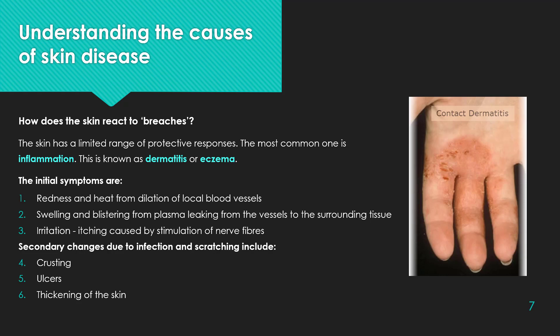How does the skin react to breaches? The skin has a limited range of protective responses. The most common one is inflammation, known as dermatitis or eczema. The initial symptoms are: redness and heat from dilation of local blood vessels; swelling and blistering from plasma leaking from the vessels to the surrounding tissue; and irritation and itching caused by stimulation of nerve fibers. Secondary changes due to infection and scratching include crusting, ulcers, and thickening of the skin.